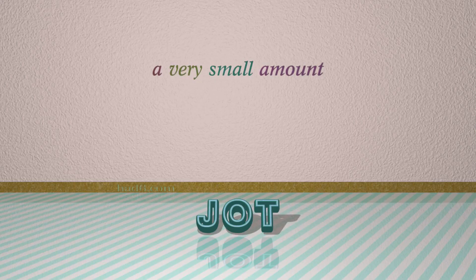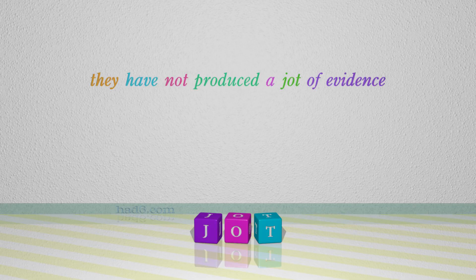Number 7: Jot. Which means a very small amount. For example: They have not produced a jot of evidence.